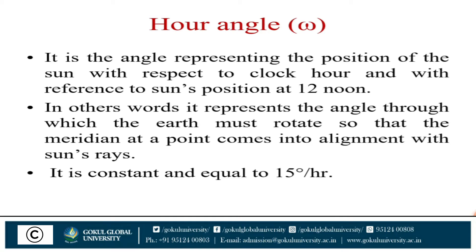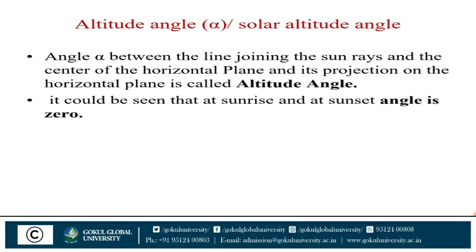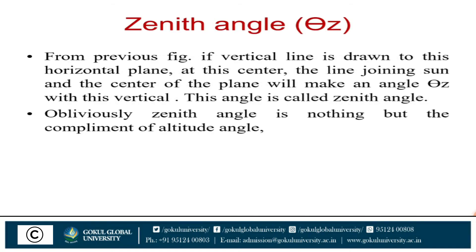Most important definition for the GTU exam: Altitude angle, also called solar altitude angle. It is the angle alpha between the line joining the Sun and the center of the horizontal plane and its projection on the horizontal plane. It can be seen that at sunrise and sunset, the altitude angle is zero. Zenith angle: A vertical line is drawn perpendicular to the horizontal plane at the center. The line joining the Sun and the center of the plane makes an angle with this vertical — that angle is called the zenith angle. The zenith angle is the complement of the altitude angle.